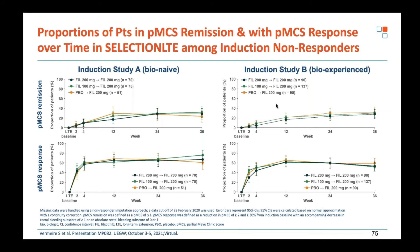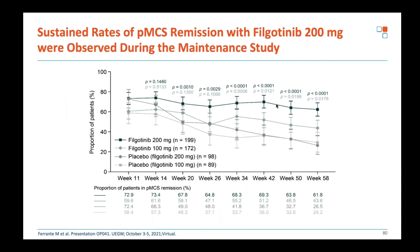For induction non-responders, a further period of filgotinib at 200 mg or 100 mg or placebo was offered, and an additional proportion of patients could be captured. Looking at remission maintenance over time, the 200 mg arm performs better than the 100 mg arm, which performs better than either placebo arm.